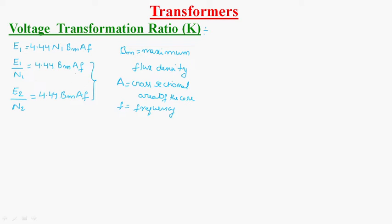So by observing these two equations, we can say E1 by N1 is equal to E2 by N2. From that, we can write E2 by E1 — by transferring E1 to the other side — E2 by E1 is equal to N2 by N1.